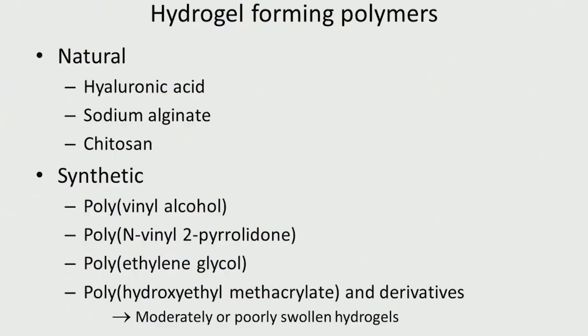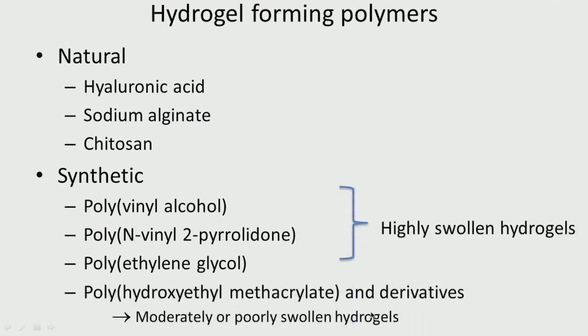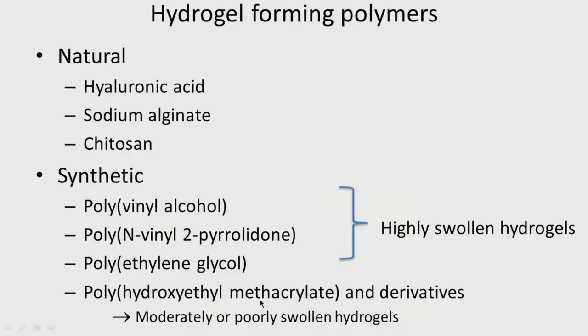Polymers that form hydrogels include natural polymers such as hyaluronic acid, sodium alginate, chitosan, glucan, and carrageenan, as well as synthetic polymers such as PVA, poly(N-vinylpyrrolidone), polyethylene glycol, and polyhydroxyethyl methacrylate and its derivatives. Some are highly swollen hydrogels and others are poorly swollen. Sometimes natural and synthetic polymers are mixed together to achieve the correct properties.